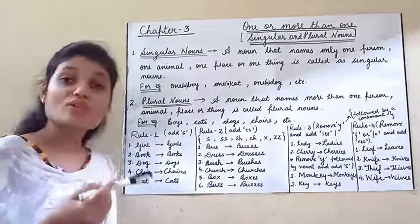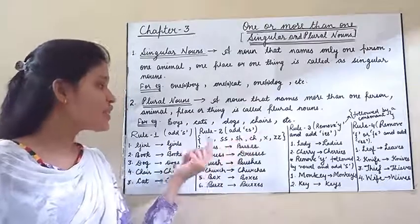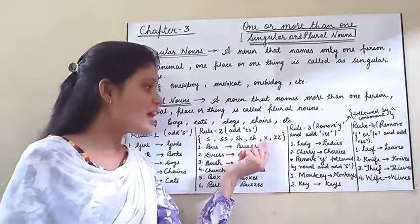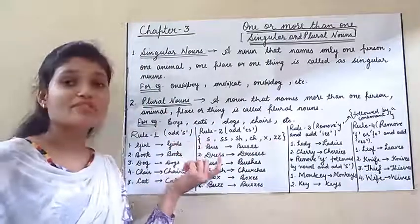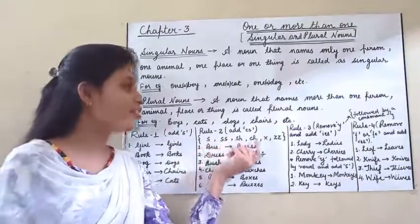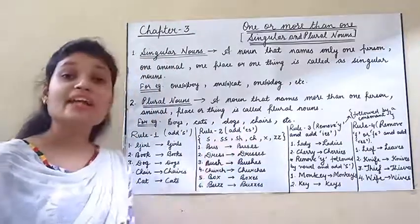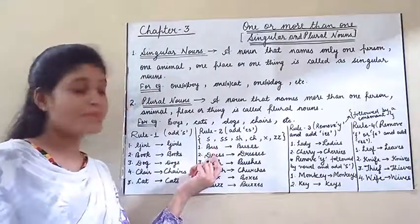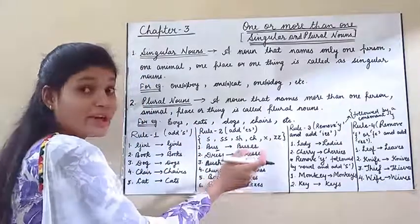The second rule: for singular nouns ending with S, SS, SH, CH, X, or ZZ — हमें क्या करना होता है? जो singular nouns होते हैं जिनके end में S, double S, SH, CH, X, या double Z आएगा, तो हम ES add कर देते हैं. Let's see the examples. First: 'bus' — the last letter is S, so we add ES, and it becomes 'buses'.